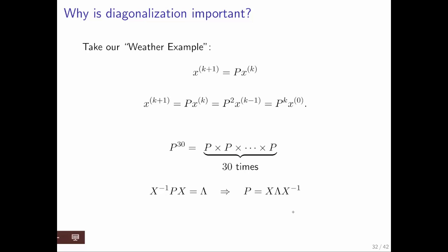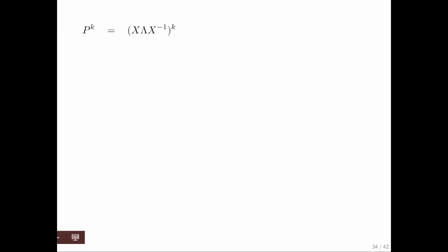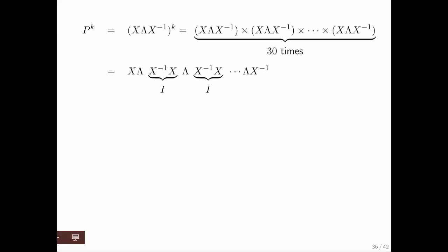If instead we diagonalize that matrix, then we recognize that P can be written as X times the diagonal matrix times X inverse. So if we then raise that to the kth power, then we can write that as 30 times just X lambda X inverse. We can then recognize that we can drop all the parentheses and insert new ones and each of these become an identity. And then we get that it's just X times lambda multiplied together 30 times, which is X times lambda to the kth power.